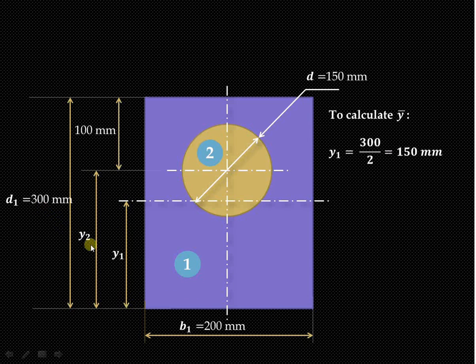y2 is the distance of the center of this circle from the base. From this particular geometry of the figure, y2 will be 300 minus 100, which gives you the value of y2. So y2 is equal to 200 mm.